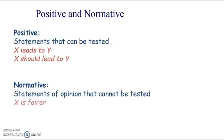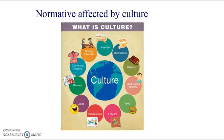Normative statements are statements of opinion and they can't be tested. This is when we're making judgments — it involves a judgment. We're using words like 'fairer,' 'less fair,' 'better,' or 'worse.' These normative statements are an important part of economics, but they're less like science in terms of being able to test them and establish principles, laws and patterns. Normative really depends upon your culture, your values, and what you think is important — all of these different factors can influence your moral and ethical values and what you think is better, worse, fairer or less fair.